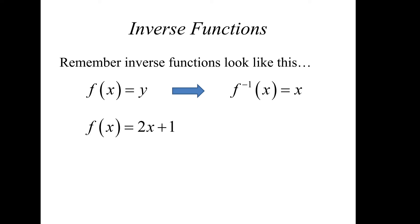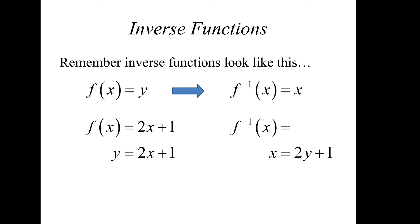For example, if f of x equals 2x plus 1, we write it in terms of y and x. To find the inverse, we swap the variables: x equals 2y plus 1. Then solve for y in terms of x — subtract 1 from both sides and divide by 2. So we have the inverse function.